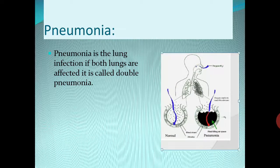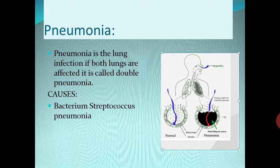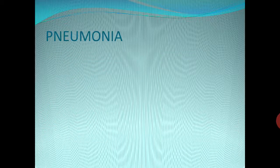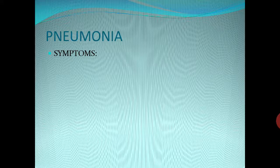The next disease is pneumonia. Pneumonia is a lung infection. If both lungs are affected, it is called double pneumonia. The causes of pneumonia include the bacterium Streptococcus pneumoniae. Some viral and fungal infections may also lead to pneumonia, when the causative organism — whether virus, bacteria, or fungi — enters the lungs.